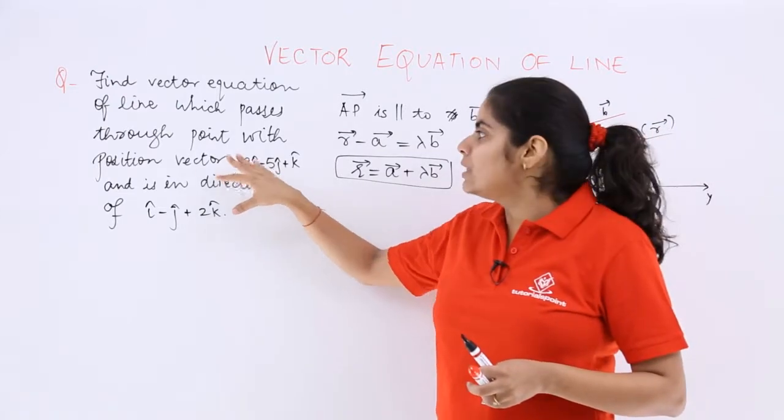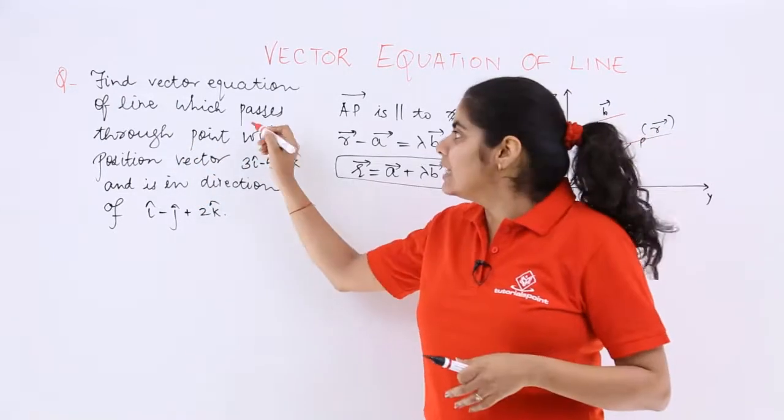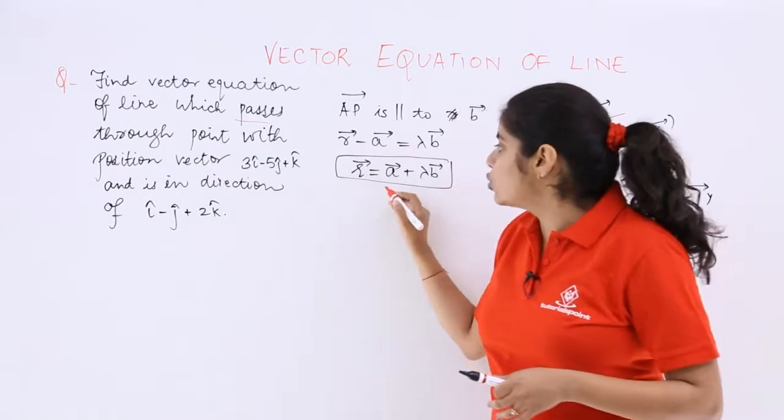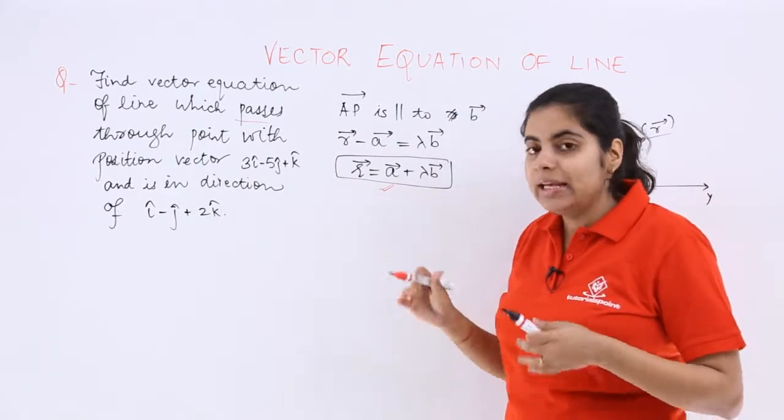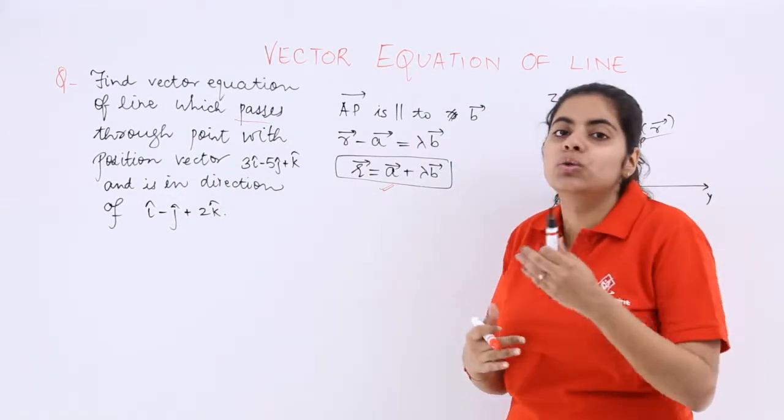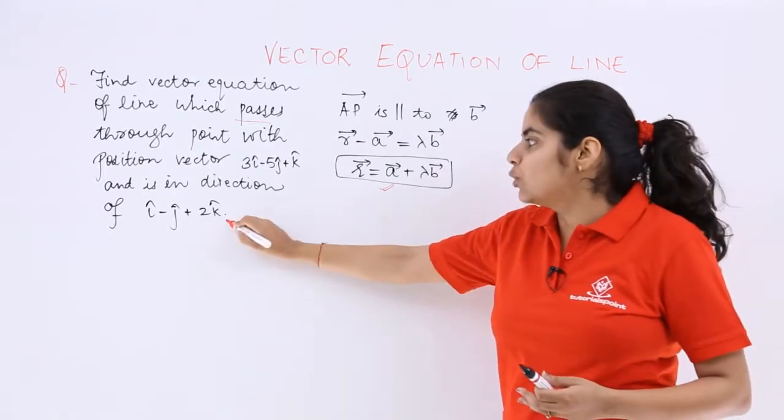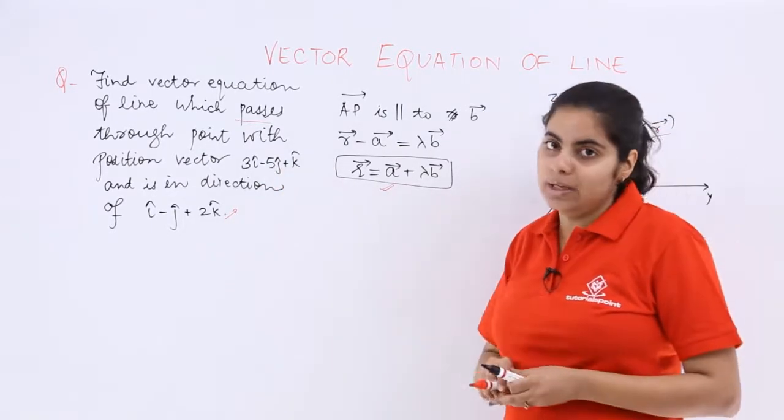r equals a plus lambda b means passes through the point. And this thing from which it passes should be your a, and in which its direction is, or through which it is parallel, is your b. So this would be your b and this would be your a.